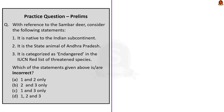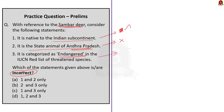Question two: With reference to the Sambar deer, consider the following statements. Statement 1: It is native to the Indian subcontinent. Statement 2: It is the state animal of Andhra Pradesh. Statement 3: It is characterized as endangered in the IUCN Red List. Which of the statements given above is incorrect? Statement 2 is incorrect — Sambar deer is the state animal of Odisha, while the black buck is the state animal of Andhra Pradesh. Statement 3 is also incorrect — Sambar deer is listed as vulnerable in the IUCN Red List, not endangered. The correct answer is option B: 2 and 3 only.